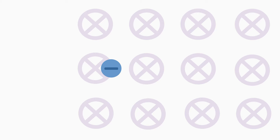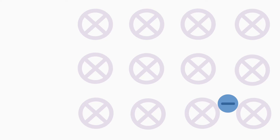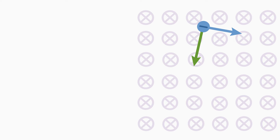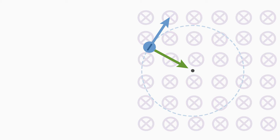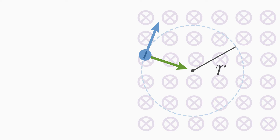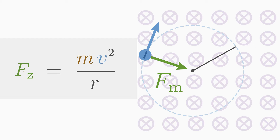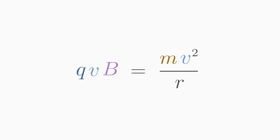We noticed earlier that an electron moving to the right is deflected downward in this magnetic field, but it is not deflected downwards arbitrarily. The Lorentz force always acts at a 90-degree angle to the direction of velocity — this is what nature tells us — and this has the consequence that the electron is forced into a circular motion. This resulting circular path has a certain radius r, which depends on how large the Lorentz force on the particle is. A particle performing circular motion with mass m is held on the circular path by the centripetal force Fz. In this case, the Lorentz force acts as the centripetal force, so we set QVB equal to m times v squared divided by r.